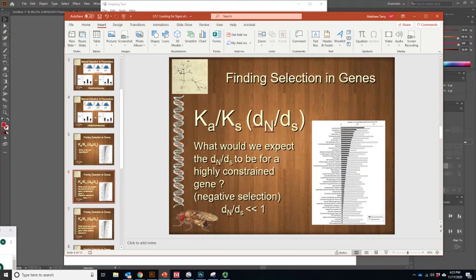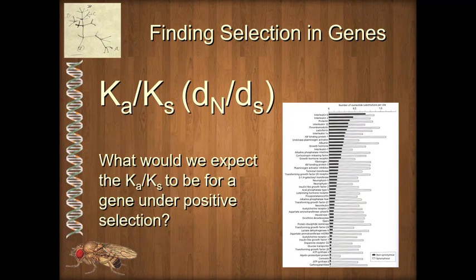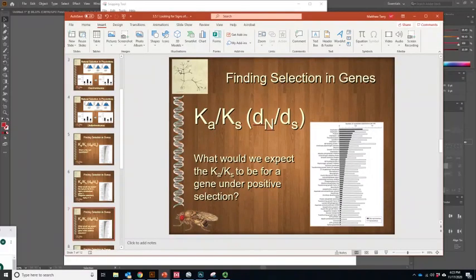This method only works in coding sequences, because there's no such thing as a synonymous versus non-synonymous mutation in a non-coding sequence. In non-coding regions there can be beneficial or deleterious sequences, but without a coding sequence there's no degeneracy involved, so there are no synonymous mutations. The third possibility to know is the dN-dS ratio under positive selection.